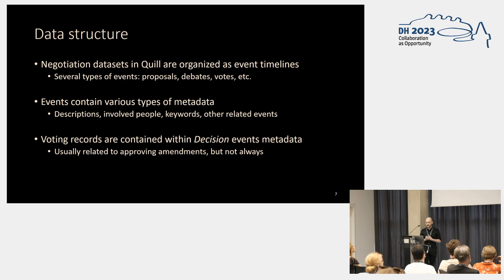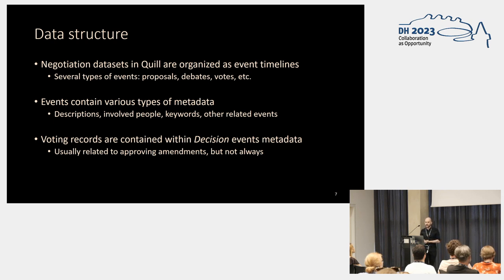The data structure in Quill is that we have negotiation data sets organized as event timelines. Quill has several different types of events: proposals, debates, votes, or procedure events such as someone joining or leaving a committee, or deciding to adjourn. All these events contain various types of metadata — descriptions, references to people, keywords, or references to other connected events. Voting records are contained within events of the decision type, usually related to approving or rejecting an amendment to a document, but not always.